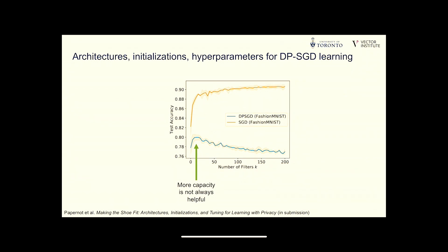Learning with privacy also reveals how we should design machine learning models. Knowing you'll train with privacy leads to completely different design choices. Without privacy, adding more parameters generally improves performance. With privacy, there is an inflection point after which adding more parameters degrades performance. This makes sense because the privacy-preserving algorithm clips information from training examples to a maximum magnitude — more parameters means splitting that small amount of information across more parameters, so each parameter learns less.